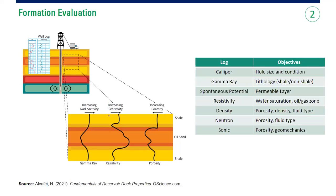We still need to understand formation evaluation, but not as deeply as our petrophysicist colleagues. Our main tool is the log. From various types of logs we have the caliper to know the borehole size and condition, gamma ray log to know the lithology — whether we have shale or non-shale, maybe sand or maybe limestone — and spontaneous potential to distinguish permeable from non-permeable layers, and resistivity log to know the water saturation.